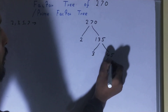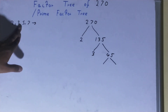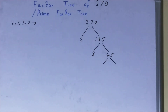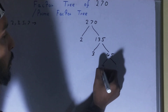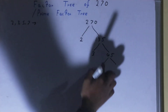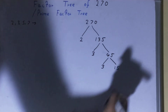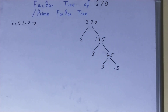We check: is 45 divisible by 3? Yes. So one of the numbers will be 3, and the other will be whatever we get after dividing. 45 divided by 3 gives us 15. Now do we need to factorize this 15 also? Yes, because this is also a composite number.